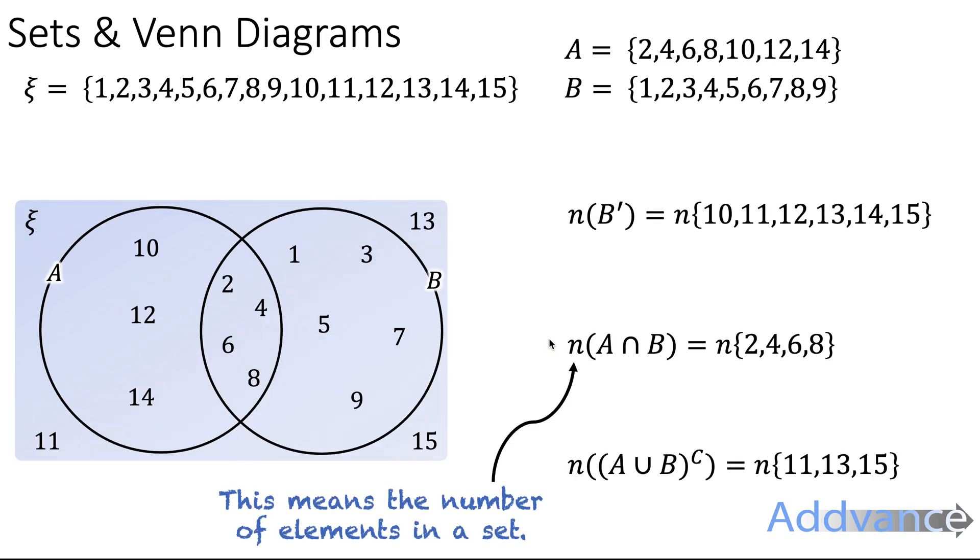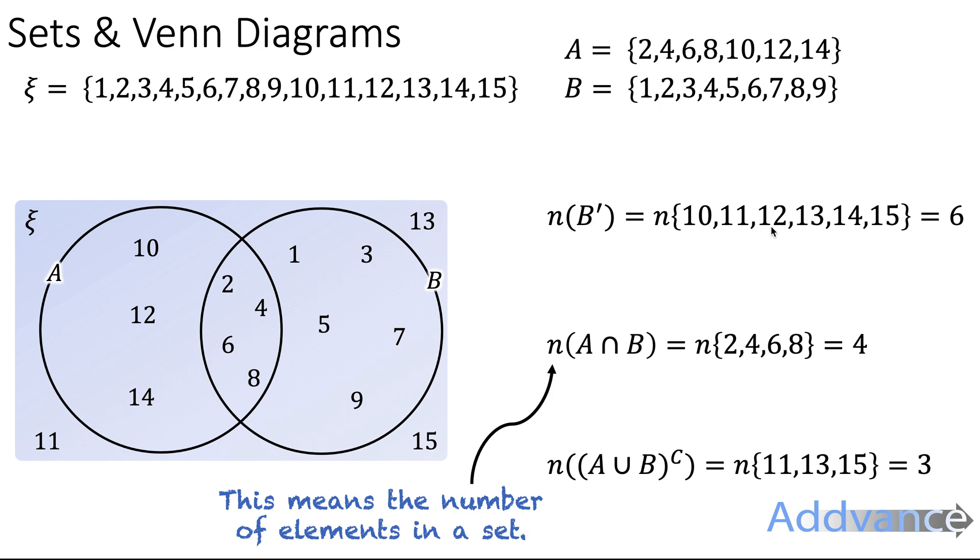Now, there's just one or two more things I'd like to show you. We've got this symbol here, N, where N represents the number of elements in a set. So N of B dash means the number of elements in B dash. The number in A intersection B is the number of elements in 2, 4, 6, and 8. So we can count up those numbers. For example, the number in B complement are 1, 2, 3, 4, 5, and 6. So there are six elements in B complement. Therefore, the answer is 6. Similarly, the number of elements in A intersection B are the number of elements in 2, 4, 6, and 8. There are four elements in that set, so the answer is 4.